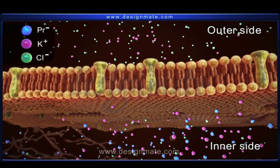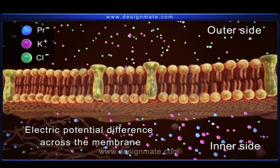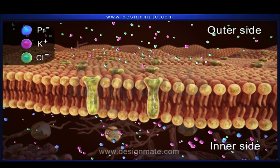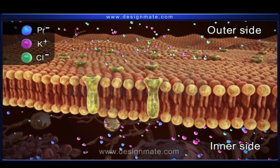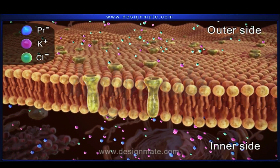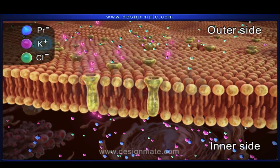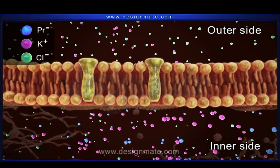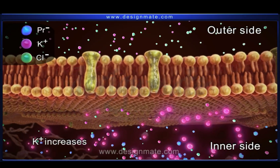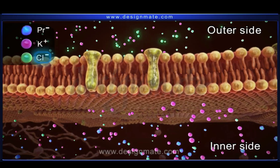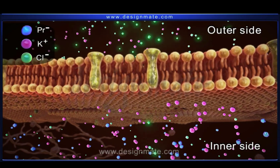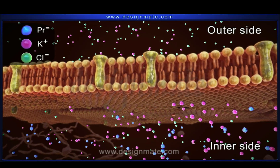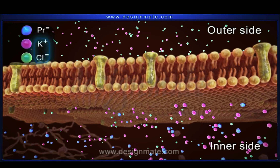This establishes an electric potential difference across the membrane. To maintain an electrical equilibrium, i.e., balanced concentration of positive and negative charges across the semi-permeable membrane, K+ from the outer side of the membrane are drawn in against the concentration gradient. The concentration of cations, K+, thus increases on the inner side of the membrane. The Cl- ions, being freely permeable, move from the outside to the inside of the cells along the concentration gradient. Equal number of cations and anions move across the membrane.